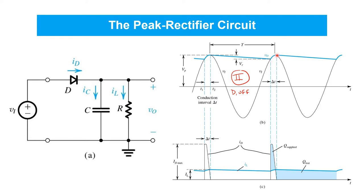At this point in time, the diode turns on again and it begins conducting until the peak of the positive half cycle of the sinusoid. So during this narrow window of time, which is referred to as the conduction interval, the source through the diode has to completely replenish all the charge that's lost during the rest of the sinusoidal cycle. The picture in terms of current waveforms looks like this.